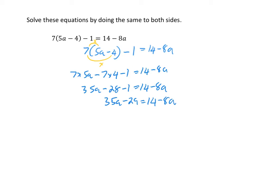Now that I've simplified my original equation, my next step is to collect like terms onto one side. I want to move minus 8a from the right-hand side to the left-hand side. The opposite of minus 8a is plus 8a, so I add 8a to both sides. So 35a plus 8a minus 29 is equal to 14.